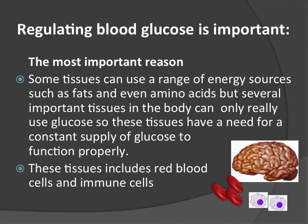Why is regulating blood glucose so vitally important? The most important reason is that some tissues can actually use a range of different energy sources, like fats and amino acids, to generate energy. But very important tissues, like the brain, can only use glucose. That means we need a constant, reliable supply of glucose in order to function properly. Glucose is highly regulated — generally between about four and seven millimolar in the blood — and we do not tolerate glucose level fluctuations very well.